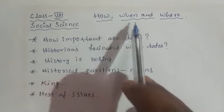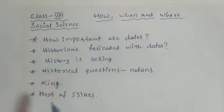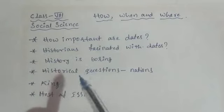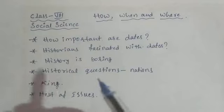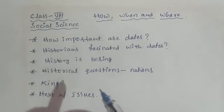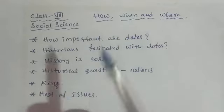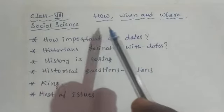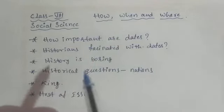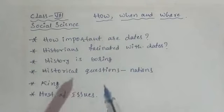The first chapter is 'How, When and Where.' When you come to social science, this question starts in everyone's mind. Social science completely stands on how, when, and where. Social means studying about the past — and when you study about the past, simple questions arise: when, where, how. This is what we are going to study today in the first lesson.